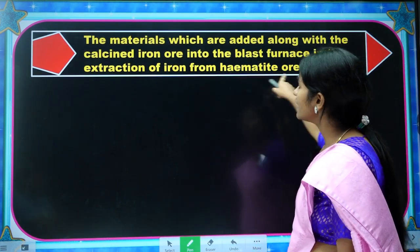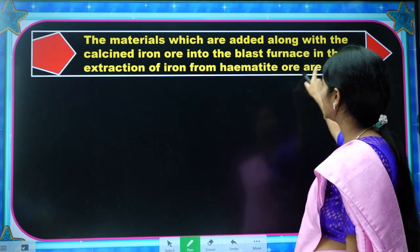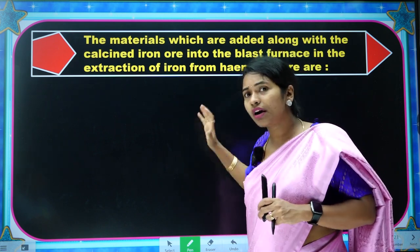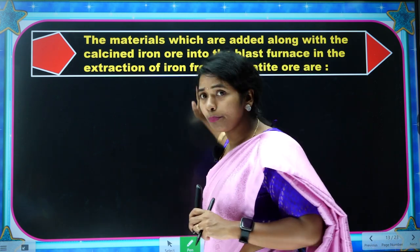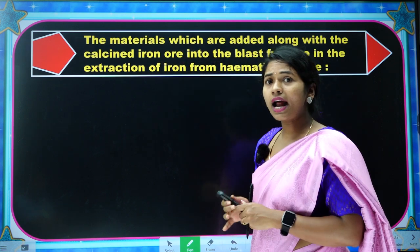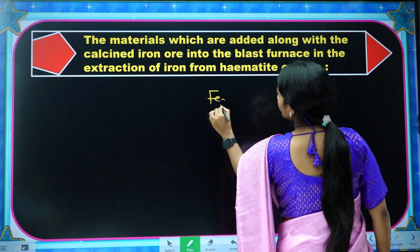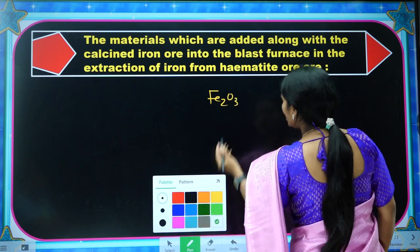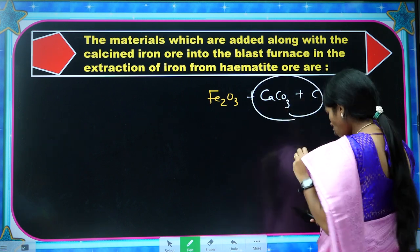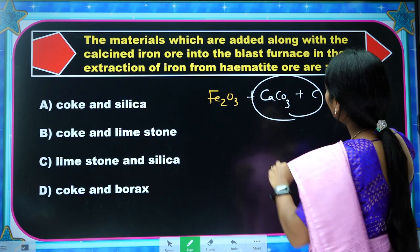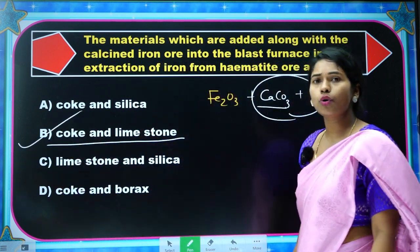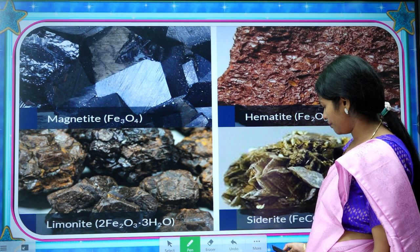Next question: The materials added along with calcinated iron ore (hematite, Fe₂O₃) into the blast furnace for the extraction of iron are — what are you adding? CaCO₃ (limestone) plus coke. Looking at the options, you are adding limestone (CaCO₃) and coke. Option 2 is the correct answer.